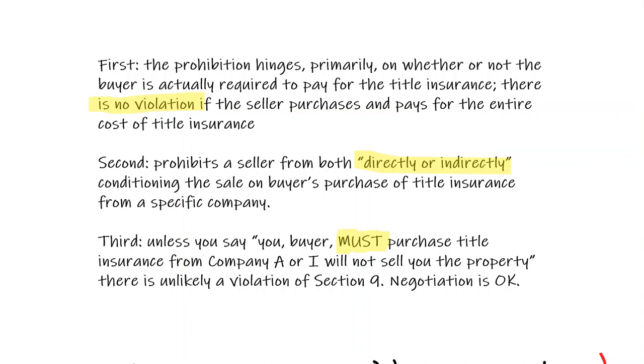If you say you must purchase from this title company or I will not sell to you, there is a violation. So unless you say that, there probably is unlikely a violation. So you literally can negotiate the title company as long as you don't get to the point where it becomes this. If it's the only thing you're arguing and you're arguing back and forth about just the title company and you're not paying for it all as the seller, that would be the violation. So if your buyer says I want to use title company B, you can actually counter back the price and use title company A.